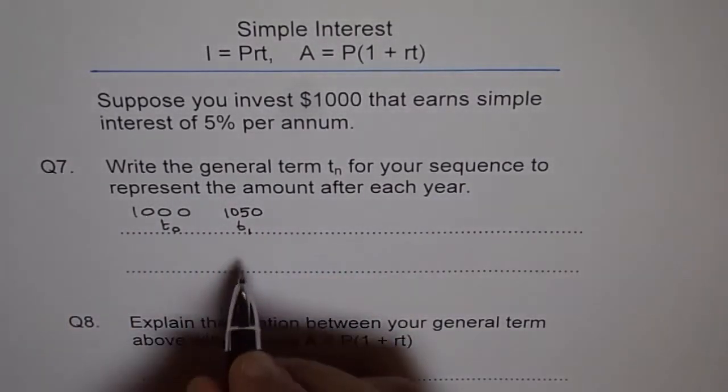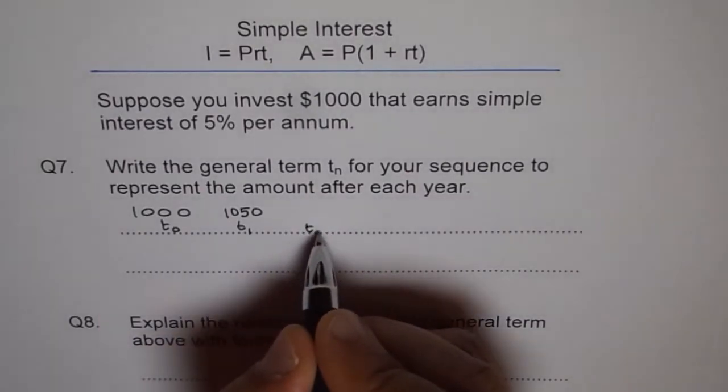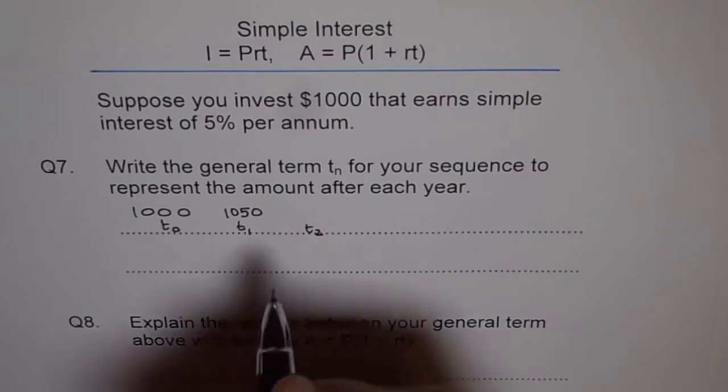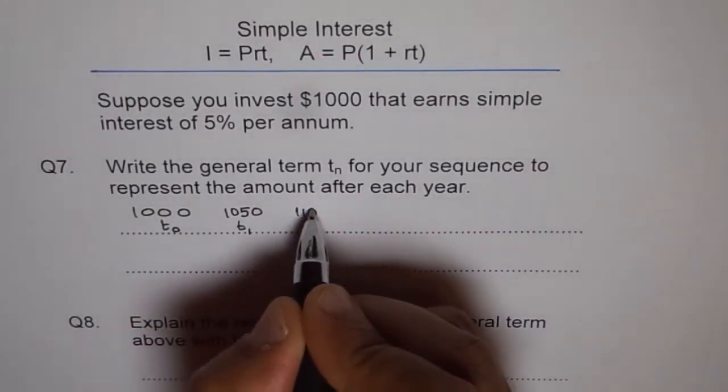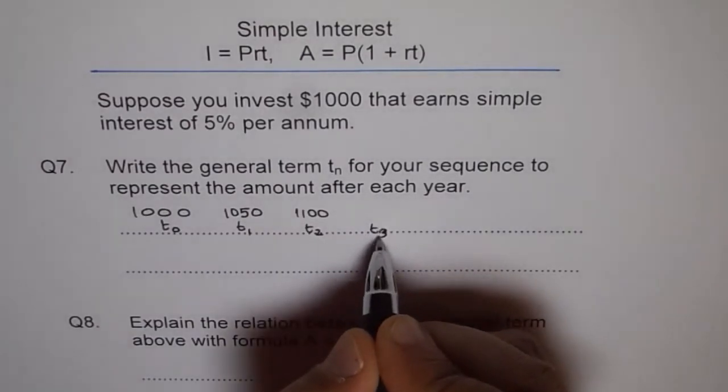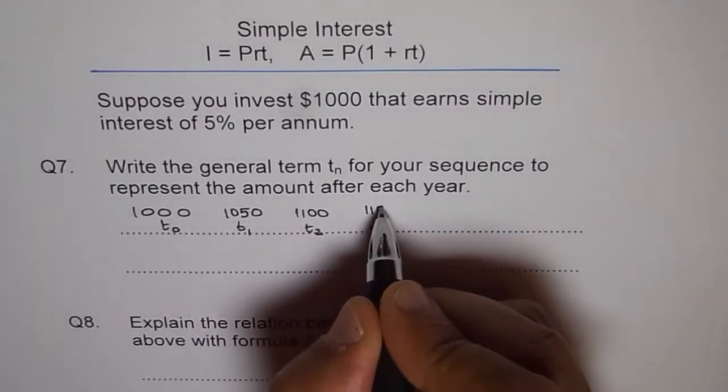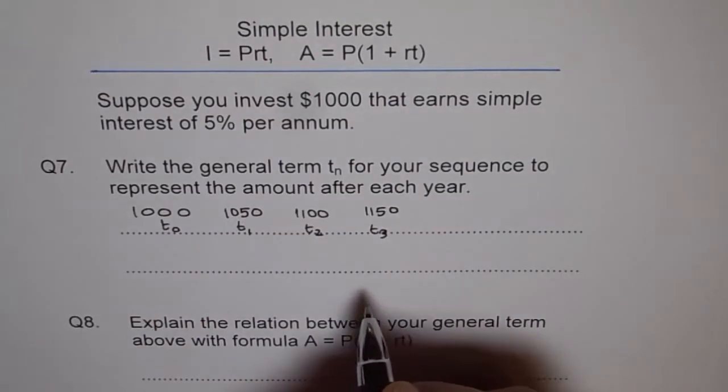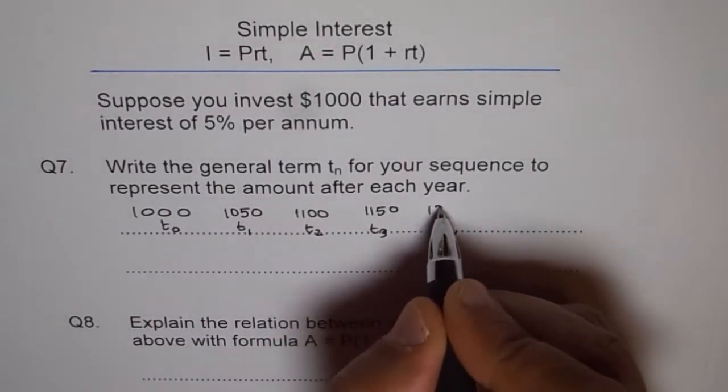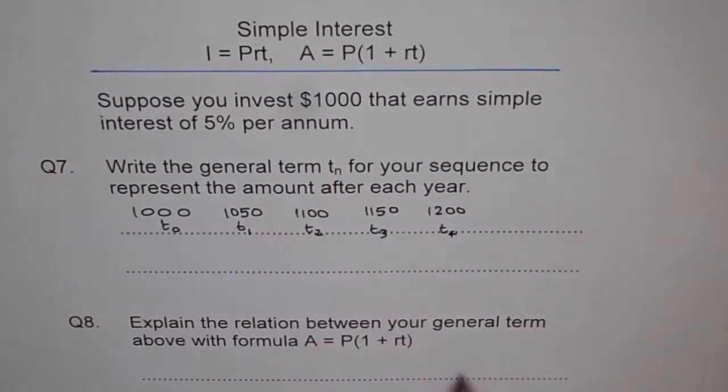Now at the end of second year, what happens? We only earn interest on the initial amount invested. So at the end of second year, we get $50 more as interest. So it becomes $1100 for us. And at the end of third year, we get $50 more. So it becomes $1150. And at the end of fourth year, another $50, it becomes $1200.